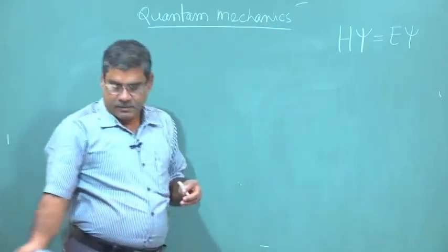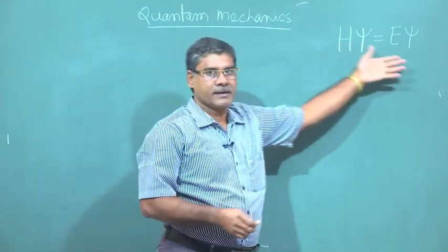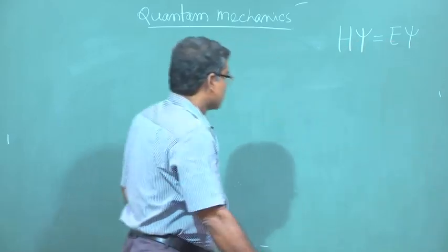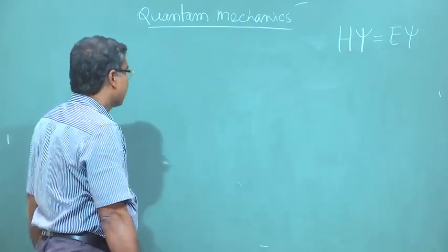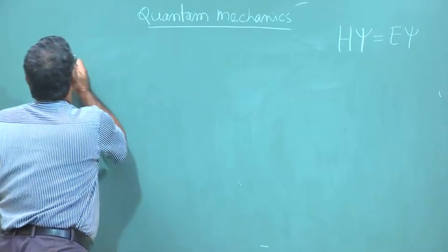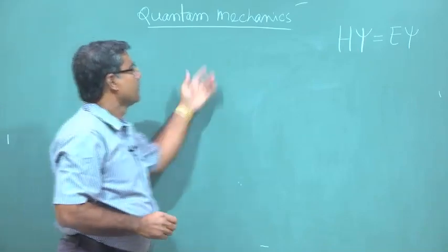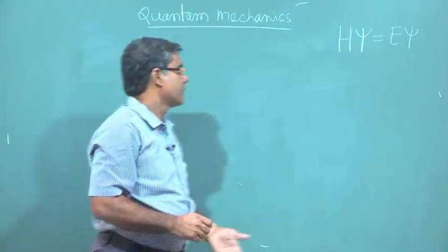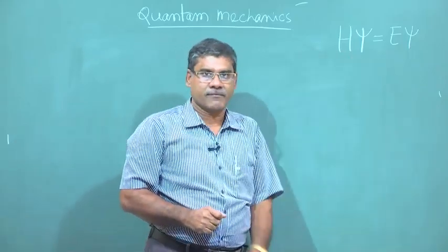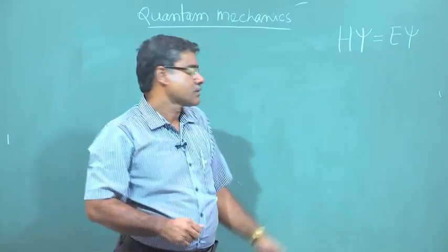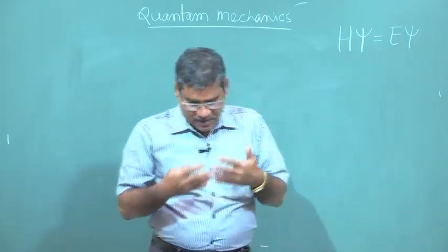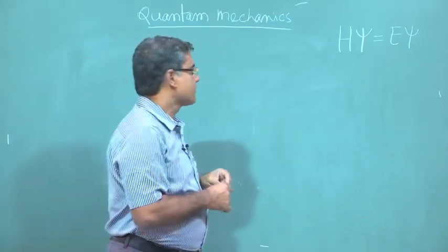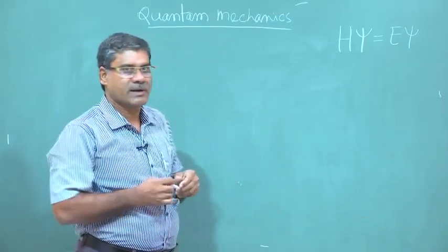The Schrödinger equation is written as H psi equal to E psi. That equation is called the Schrödinger equation. Now, what is H, what is psi, what is E? For that one has to go through some postulates. This quantum mechanics is also based on some postulates — there are 5 or 6 postulates.